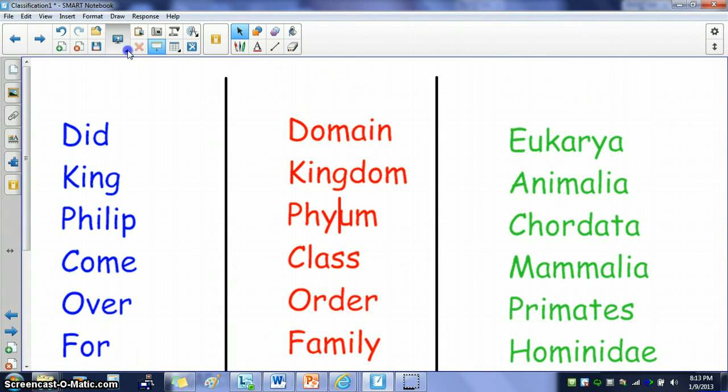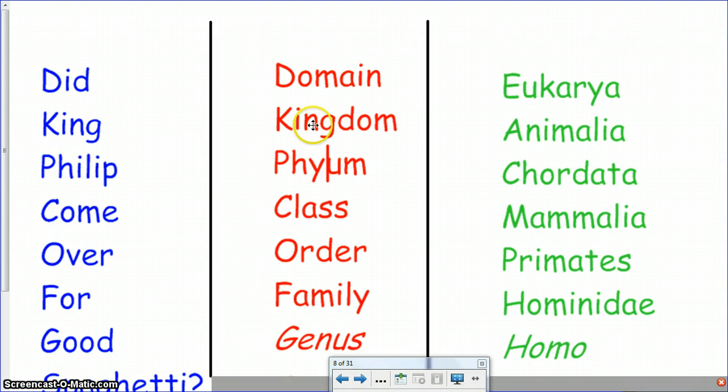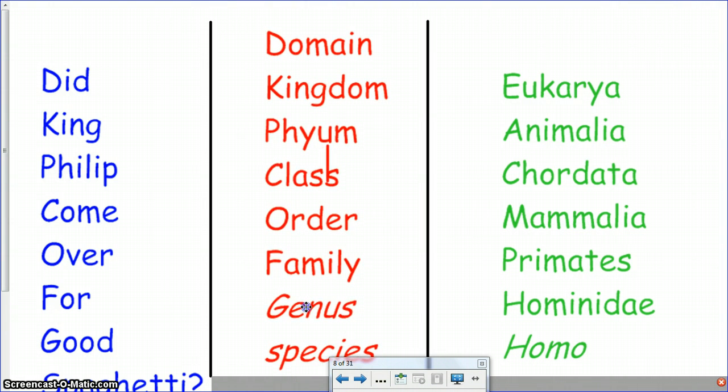But if you start with kingdom at the top, then you have kingdom, phylum, class, order, family, genus, and species.